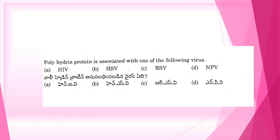Polyhedrin protein is related to which virus? The first option is HIV, human immunodeficiency virus. This is an easy question and we will try to eliminate the correct answer.